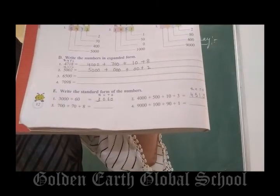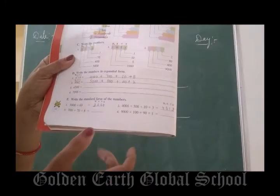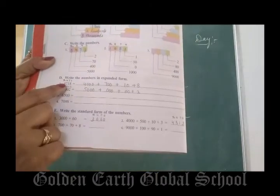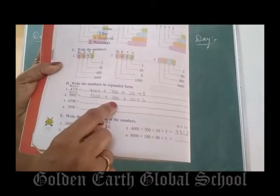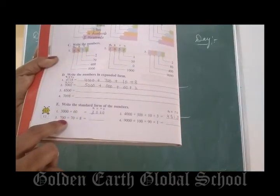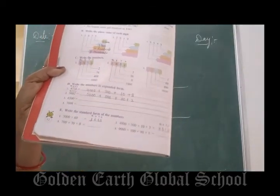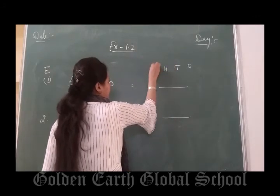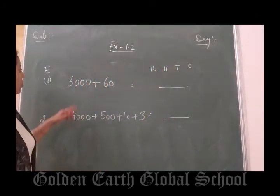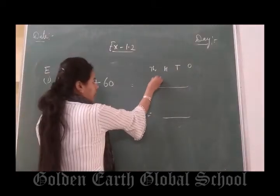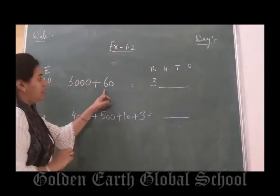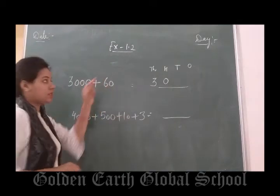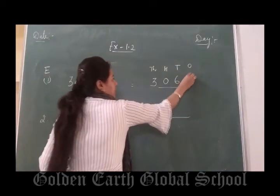Now we will start Part E. In this part, you have to write the standard form. Here expanded form is given and you have to write the standard form. First step: write the places — 1, 10, 100, 1000. Read the number: 3,000. In the thousands place put 3. There is no hundreds value, so put 0. 60 means 6 in the tens place.